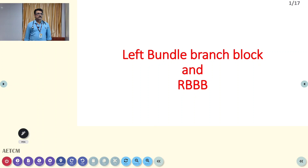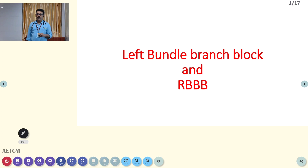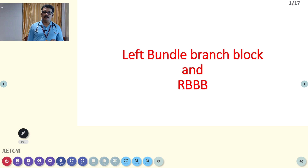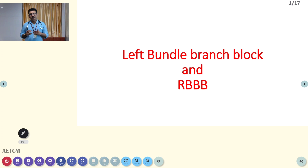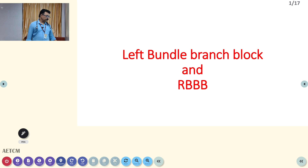Welcome to AETCM, the emergency medicine channel. Today as part of ECG learning, we are going to discuss about bundle branch blocks, especially left bundle branch block. There are two types of bundle branch block: left bundle branch block and right bundle branch block. The right bundle branch block is most of the time an innocent problem, very rarely associated with major complications, but left bundle branch block is always pathological — it can be an acute or chronic problem, but always pathological.